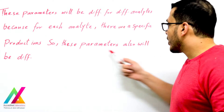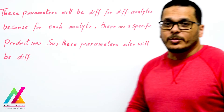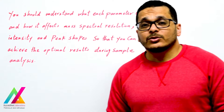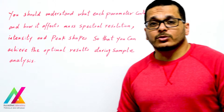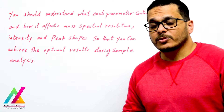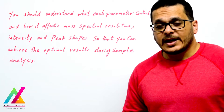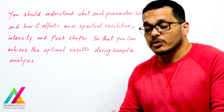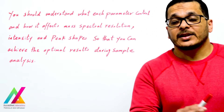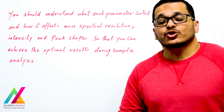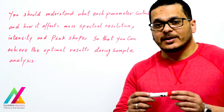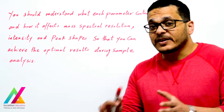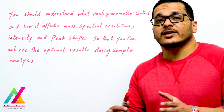These parameters will be different for different analytes, because for each analyte there are specific product ions, so there will also be specific parameters for each analyte to get its product ions. Before you build your acquisition method, you should understand what each parameter controls and how it affects mass spectral resolution, intensity, and peak shape, so you can build an acquisition method fit for your target analytes and achieve optimal results during sample analysis.